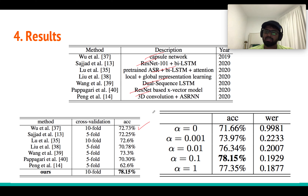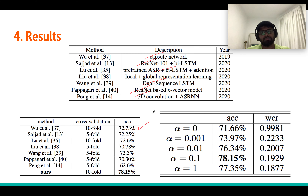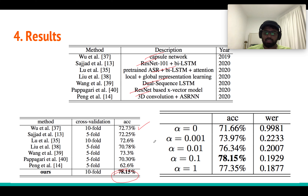There are two accuracy measures: weighted accuracy, which is just normal overall accuracy averaged across all utterances, and unweighted accuracy, which is class-based. As you can see, this paper achieves 78% accuracy, which is a huge improvement and the current state-of-the-art performance on IEMOCAP.